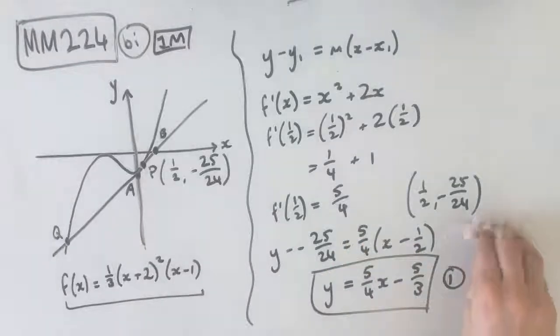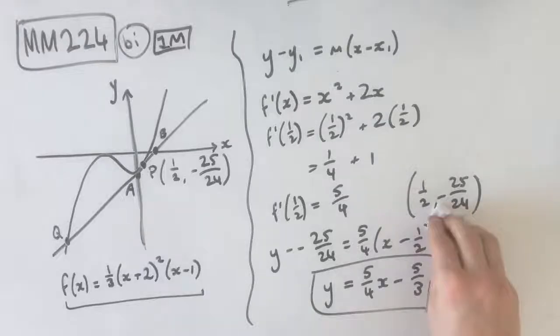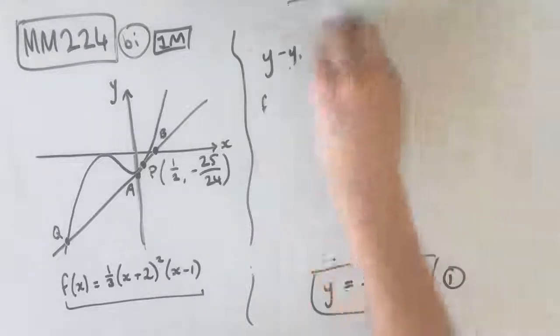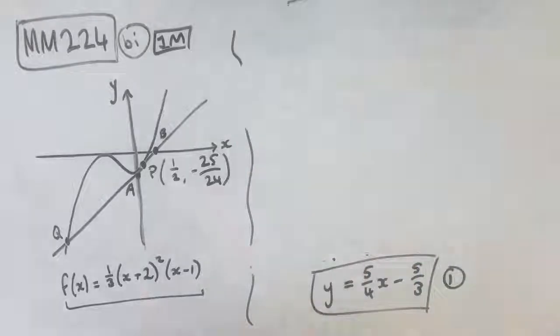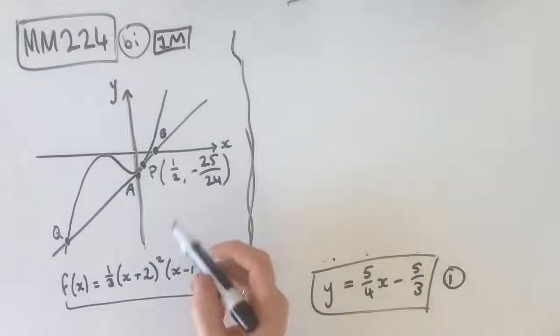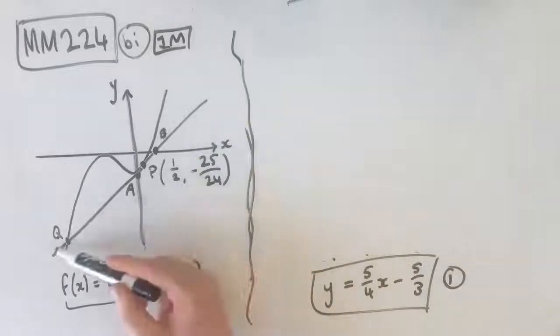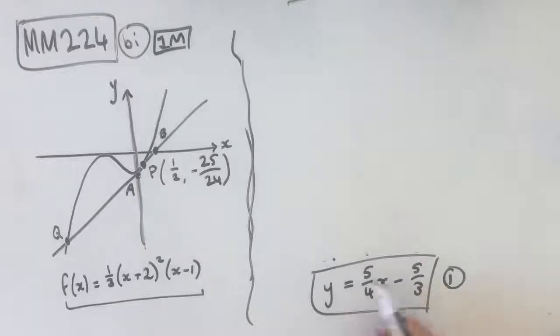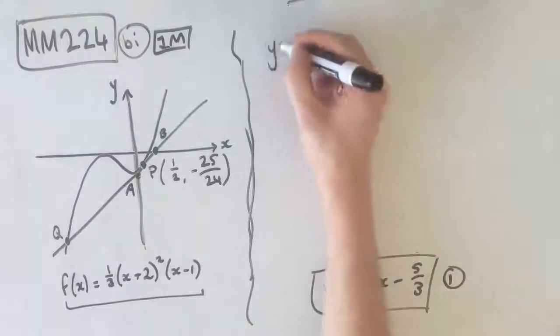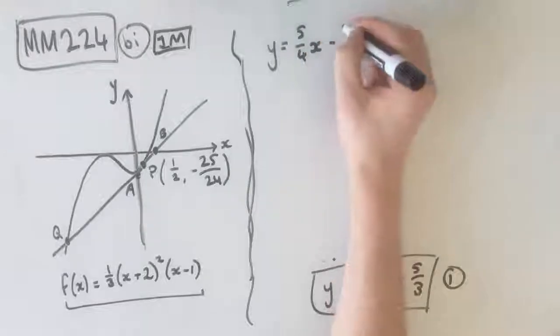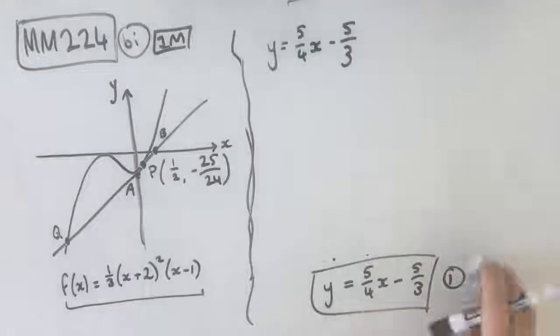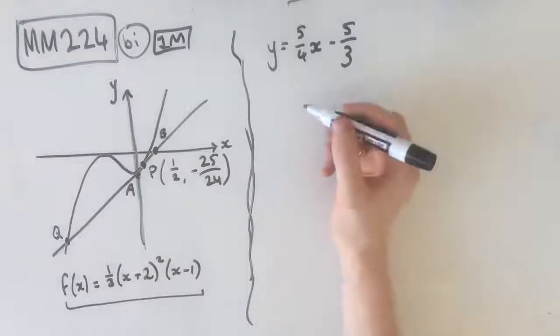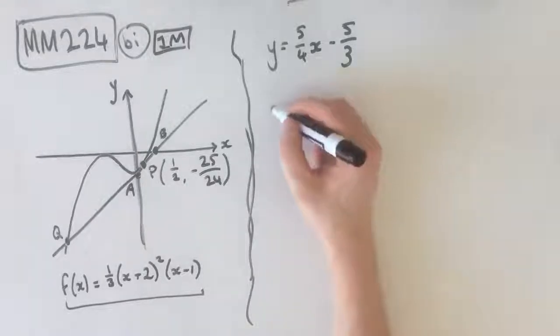Let's move on to part B.ii. Part B.ii tells us to find the coordinates of points A and B. The question told us that the points A and B were our y-intercept and our x-intercept, respectively, of the tangent. This tangent at P cuts the y-axis at A and the x-axis at B. We know that this is our equation for our tangent. How do we find our x and y intercepts? By letting x equal 0 and y equal 0. Let's find our y-intercept first. We simply let x equal 0.